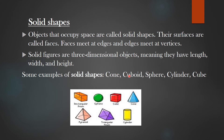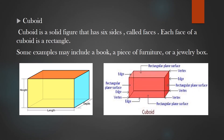Some examples of solid shapes are cone, cuboid, sphere, cylinder, cube, etc. Let us recollect the solid shapes like cube and cuboid which you have learned in class 8. A cuboid is a solid figure that has six sides which are called its faces. Each face of a cuboid is a rectangle. Some examples may include a book, a piece of furniture, or a jewelry box. From this figure we can identify the faces, edges, and vertices of the cuboid.